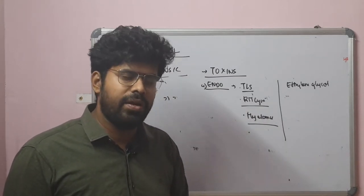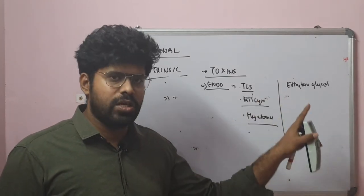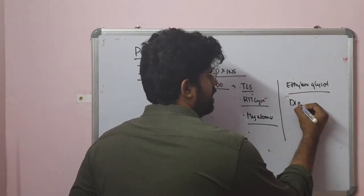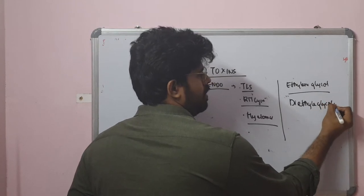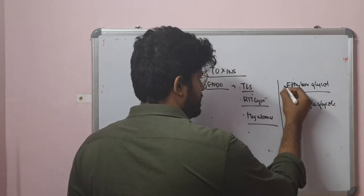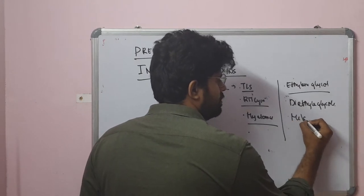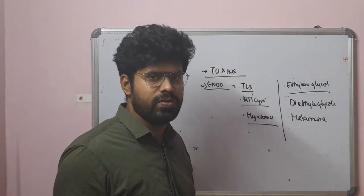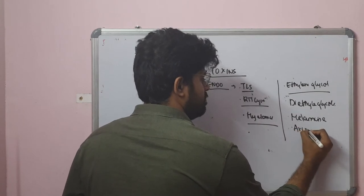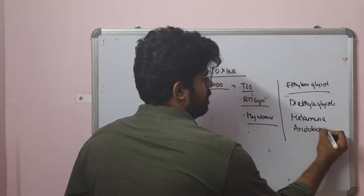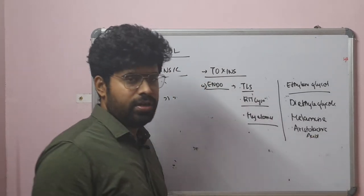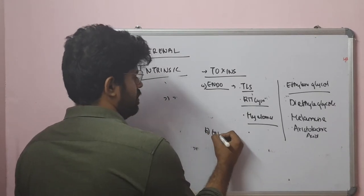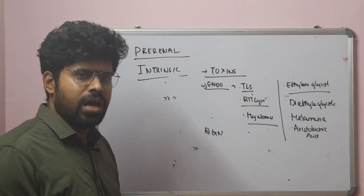In ethylene glycol poisoning, there is an increase in the osmolal gap and an increase in the anion gap. Diethylene glycol is another toxin, commonly seen as a contaminant in pharmaceutical products. Melamine, used in food preservative industries, can also cause acute kidney injury. Aristolochic acid can also cause AKI — also called Chinese herb nephropathy. Additionally, acute glomerulonephritis can produce acute kidney injury.